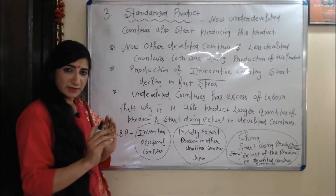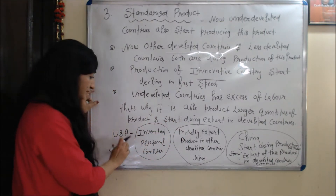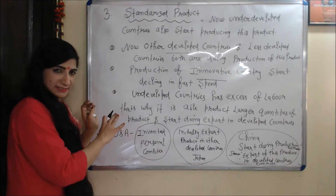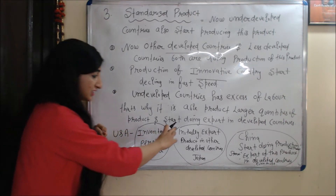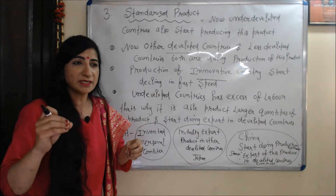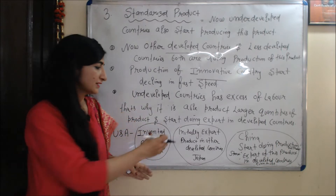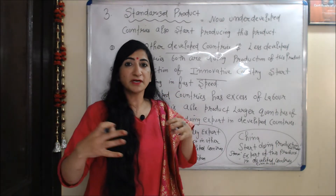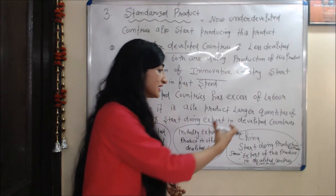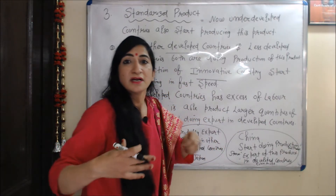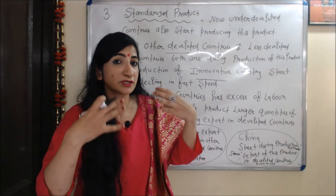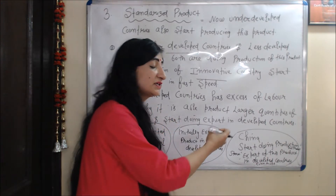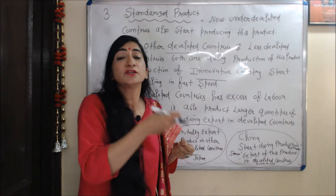To understand this with an example: the personal computer was first invented in the USA. Initially, the USA exported this product to other developed countries like Japan. After a certain time period, the product became standardized and China, which is a developing country, started doing production of these goods and began exporting them to developed countries, including the USA.